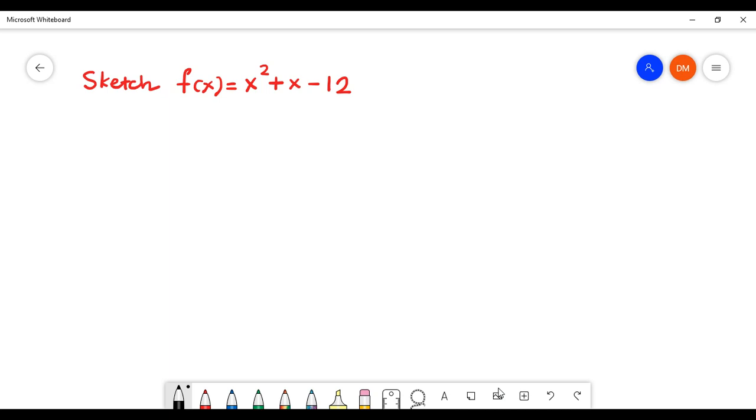Hello, welcome again to this YouTube channel. Now we're going to sketch a quadratic function. To start doing this, we have to extract our coefficients: a equals 1, b is the coefficient for x which is 1.